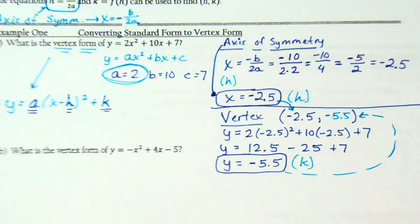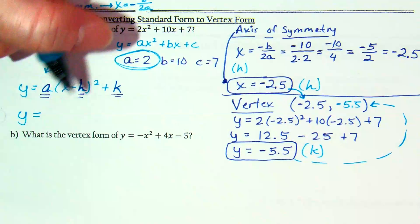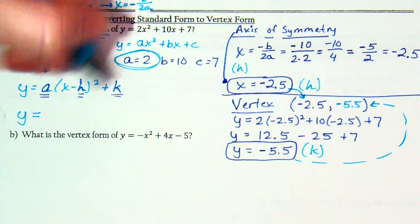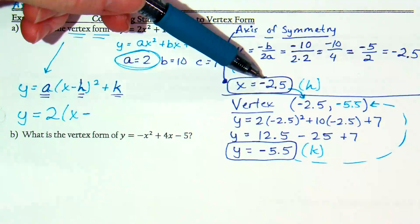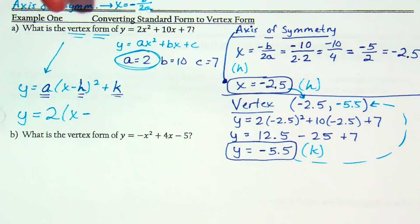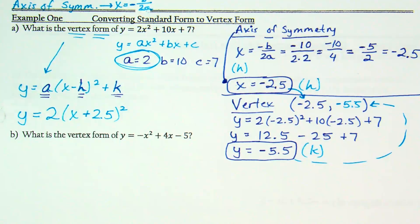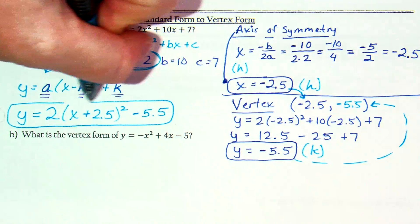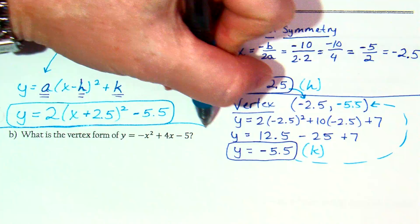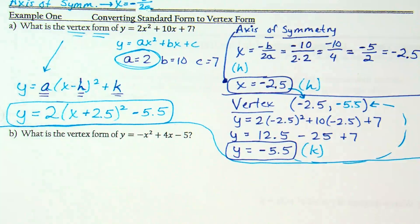Do I have all of my information to write my equation now? You should be able to write that vertex form. Y equals a, which is 2, times x minus h. X minus negative 2.5 really becomes plus 2.5, quantity squared, plus k. It's plus negative 5.5 or minus 5.5.